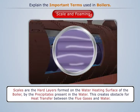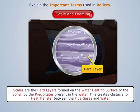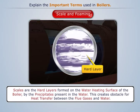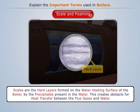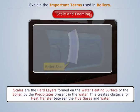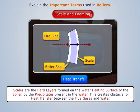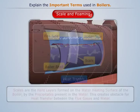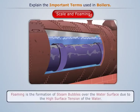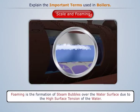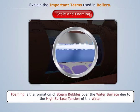Scale: scales are the hard layers formed on the water heating surface of the boiler by the precipitates present in the water. This creates an obstacle for heat transfer between the flue gases and water.